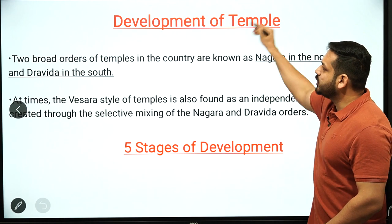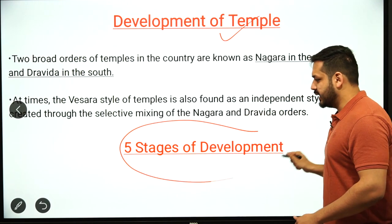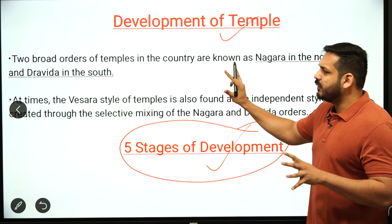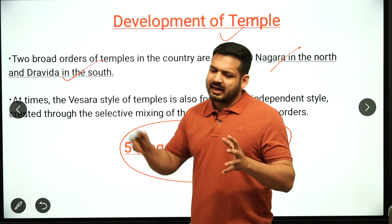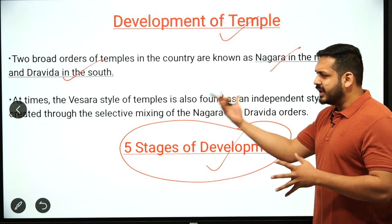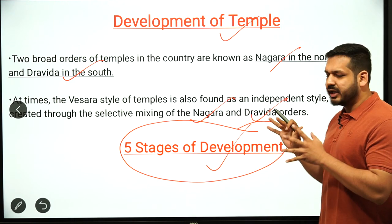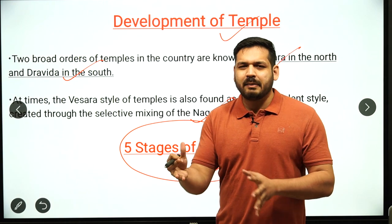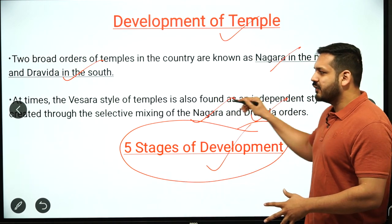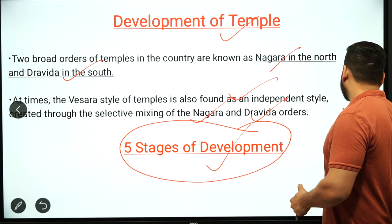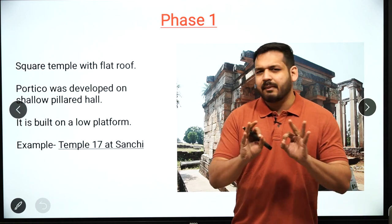Today we will discuss the development of Indian temples in five stages or phases. The broader criteria for temple architecture includes Nagara style in North India, Dravidian style in South India, and Vesara style at independent locations. We have divided the development into five phases for easy understanding.